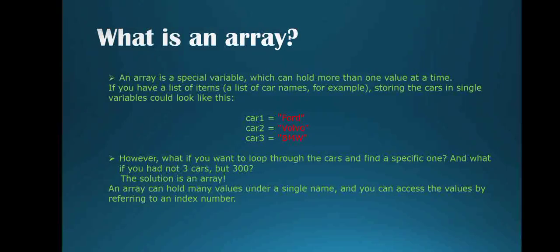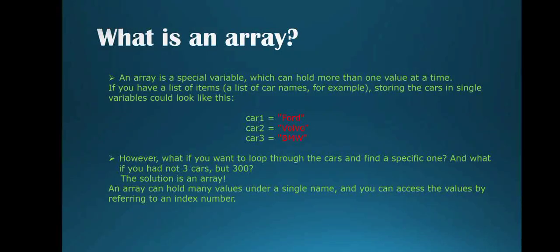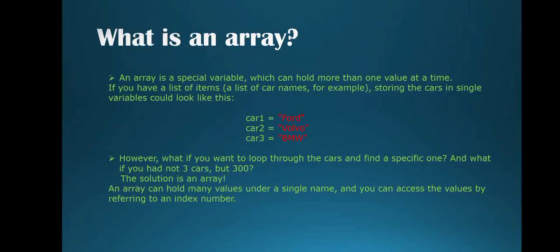An array is a special type of variable which can hold more than one value at a time. A regular Python variable is different from an array because a Python variable stores only one value, but an array can store more than one value at a time. This is the key difference between a variable and an array.